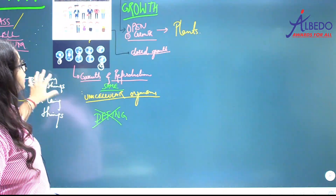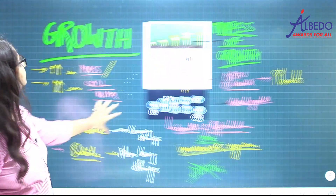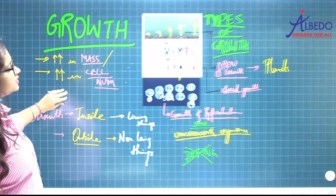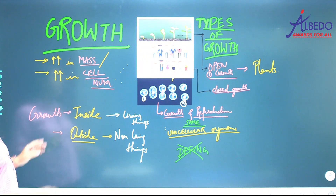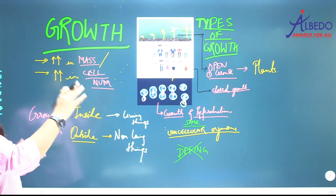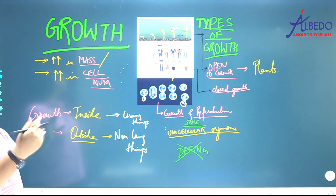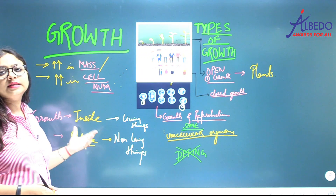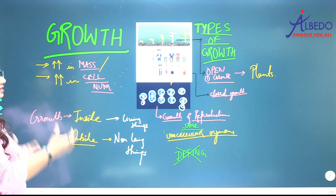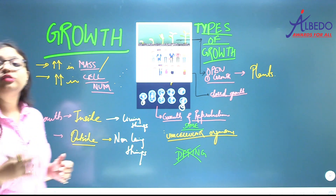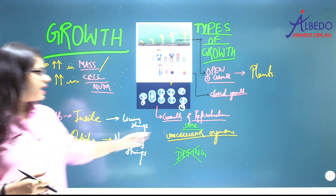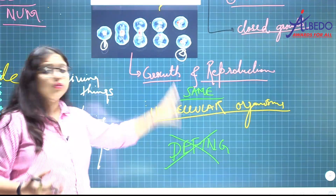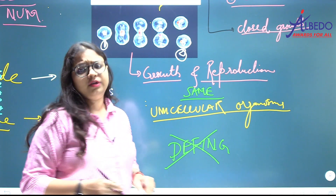With this we complete our topic of growth. To summarize: growth is increase in mass or increase in cell number. There are two types — open growth in plants and closed growth in animals. Growth from inside happens in living things, growth from outside in non-living things. Growth and reproduction are the same in unicellular organisms. And growth is NOT a defining feature of living organisms.